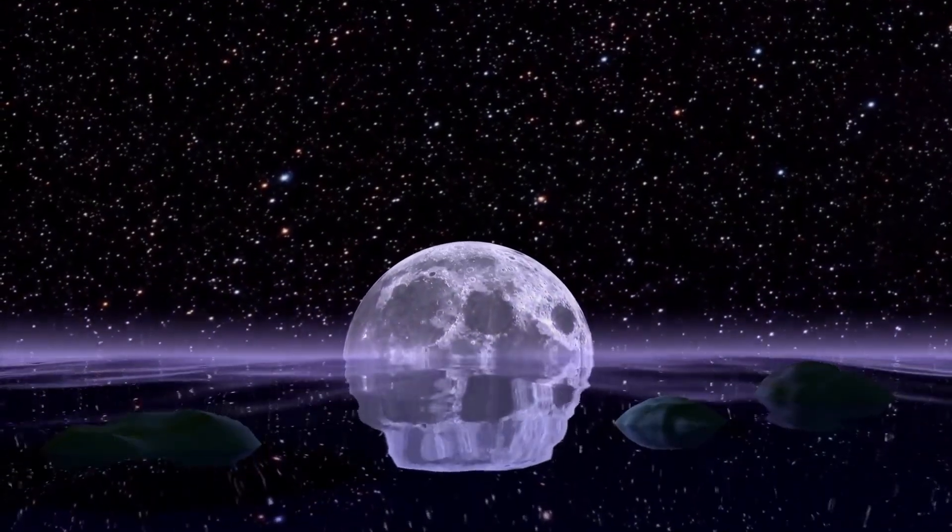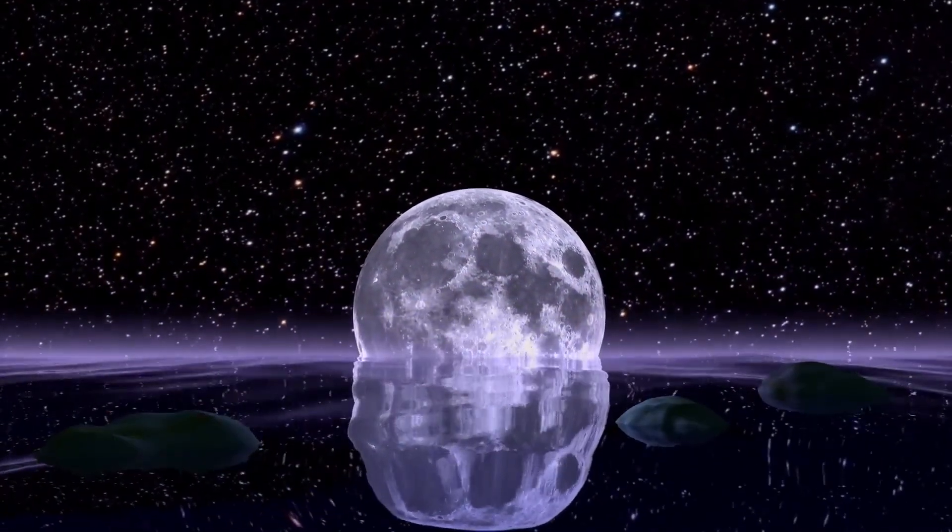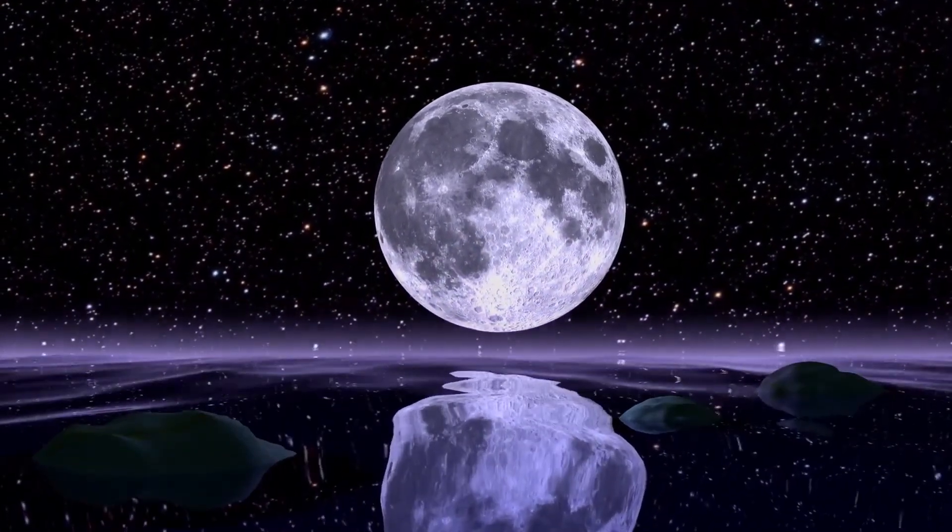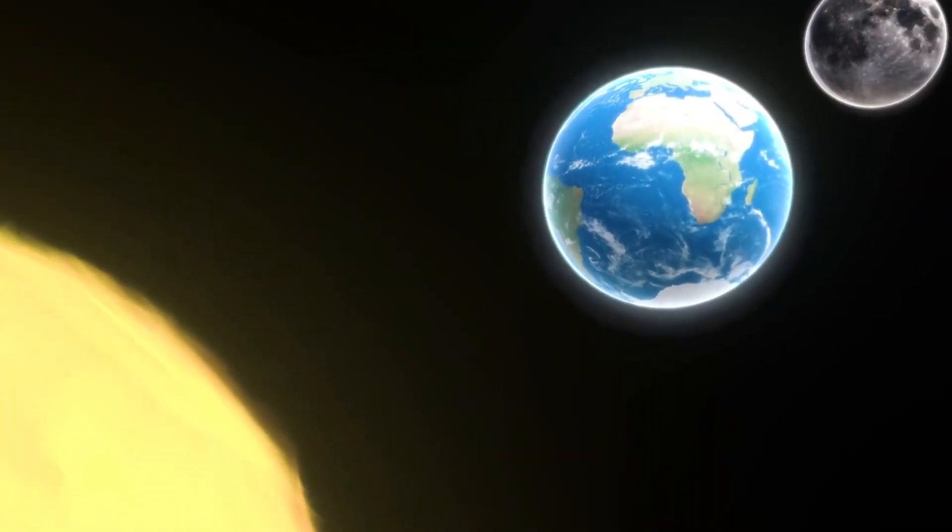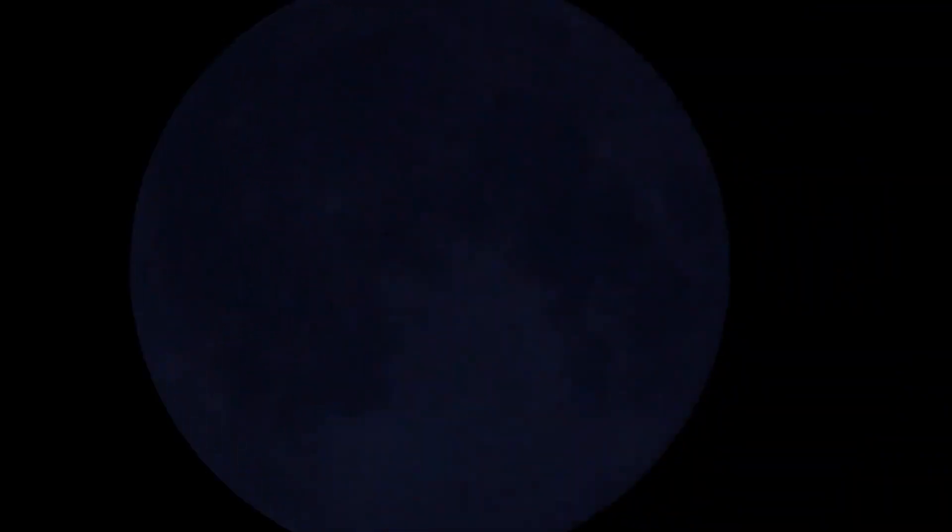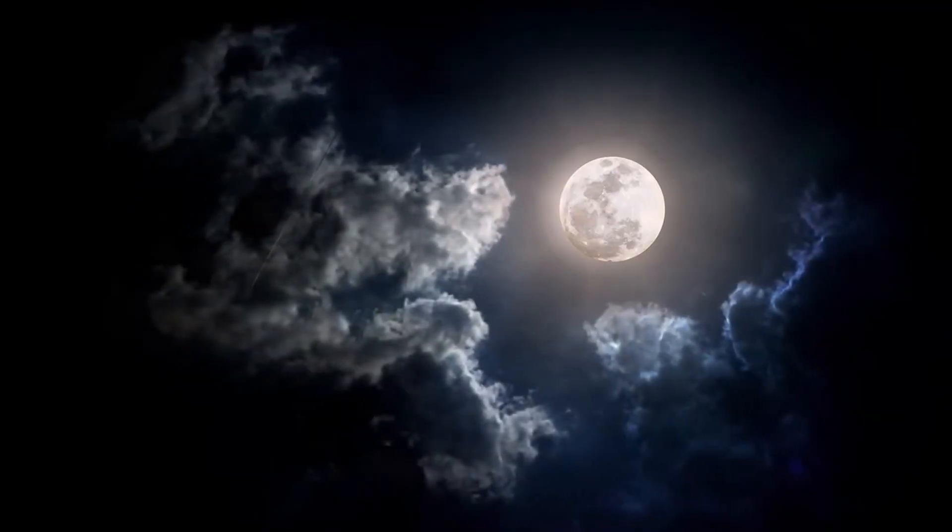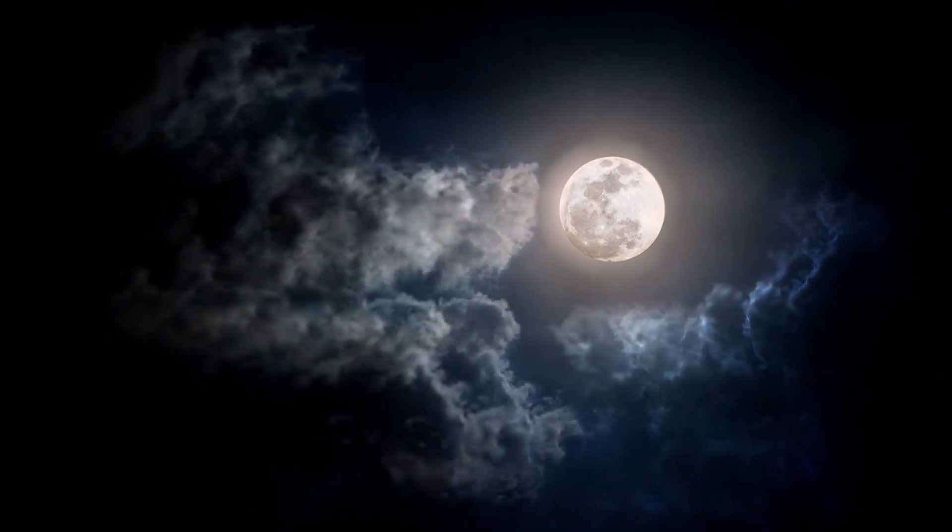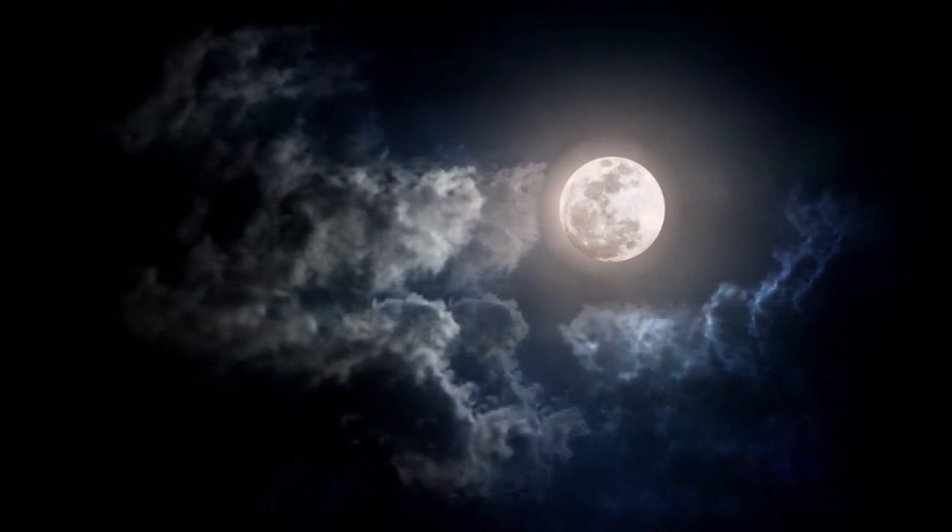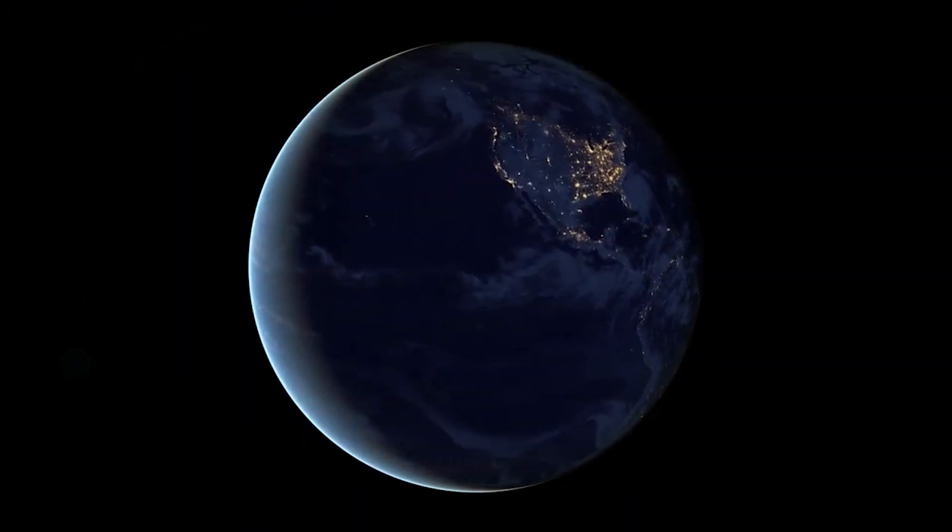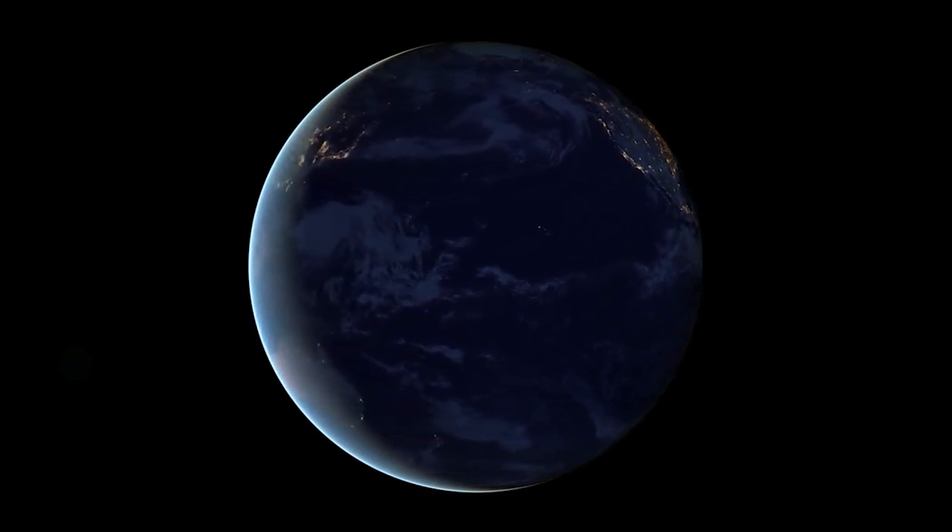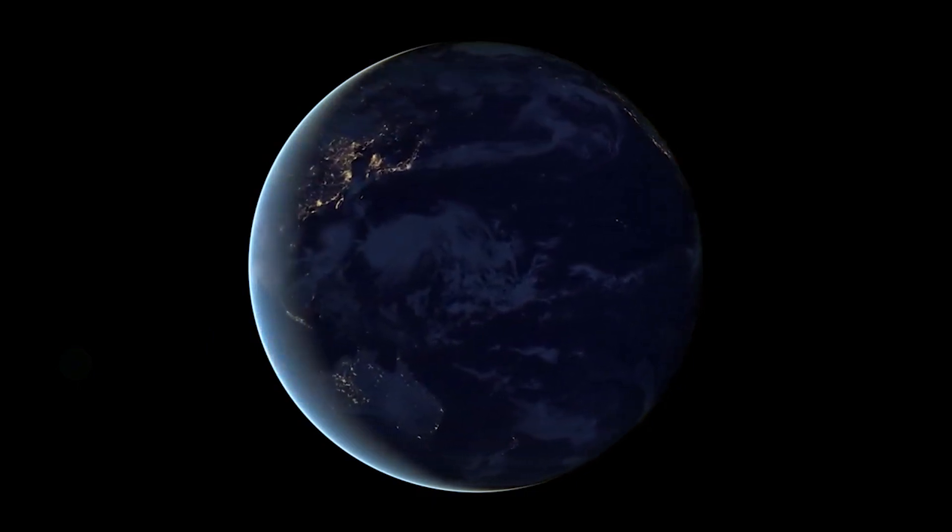It's also worth noting that the Moon's current rate of recession is anomalously high, due to the particular configuration of Earth's oceans. As continental drift reshapes coastlines over hundreds of millions of years, the rate of lunar retreat may change. While the Moon isn't in danger of disappearing entirely, its gradual retreat serves as a reminder that our solar system is dynamic and ever-changing. The stable, life-supporting conditions we enjoy on Earth are the product of a delicate cosmic balance that has evolved over billions of years.